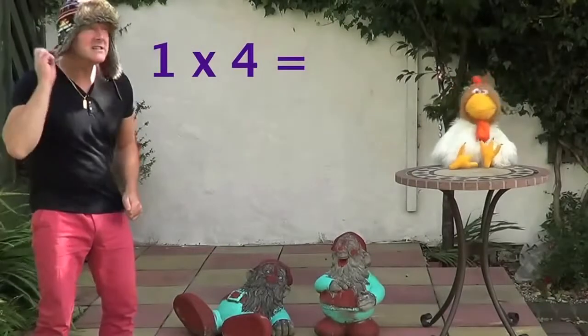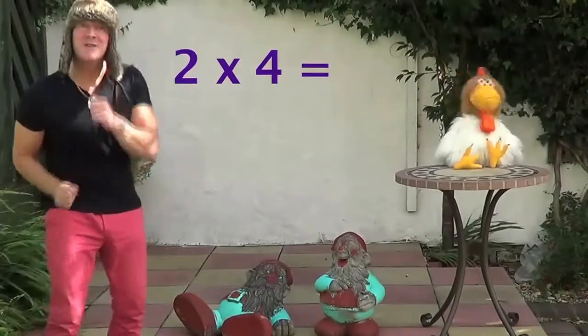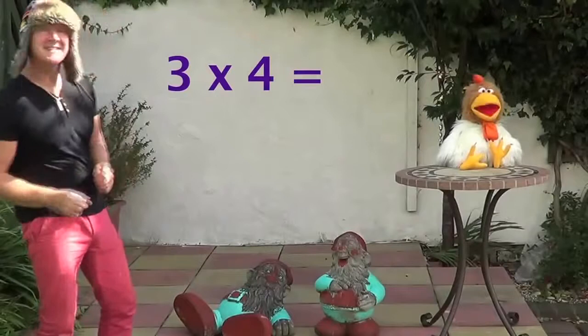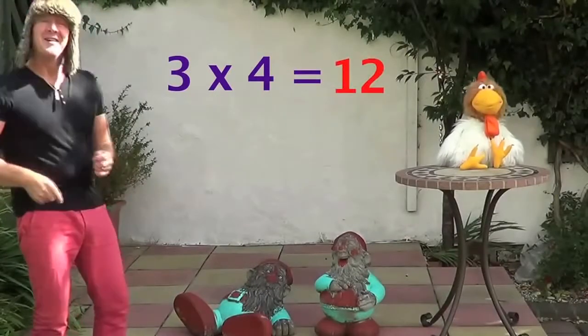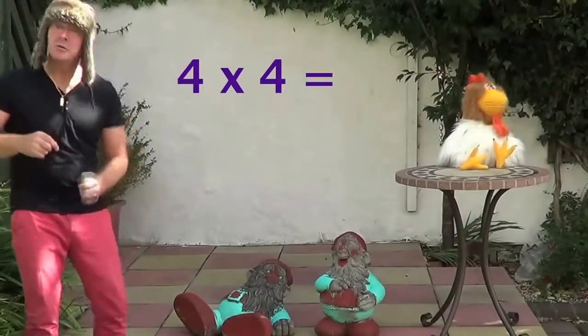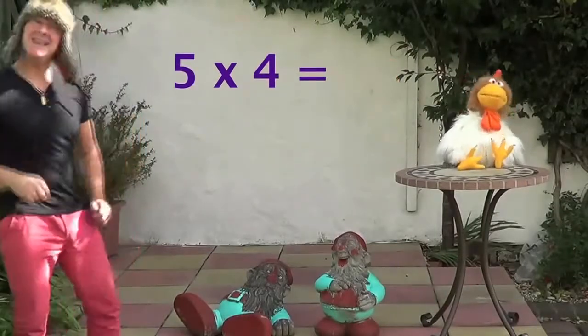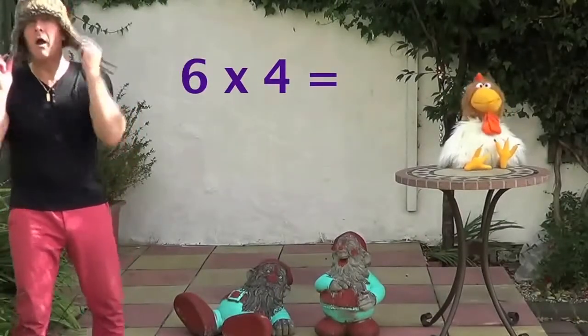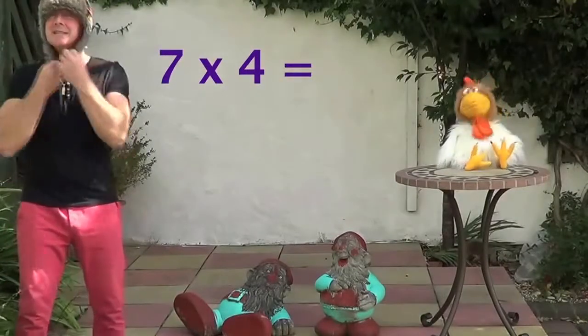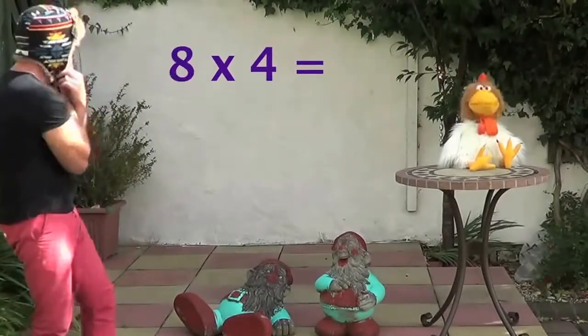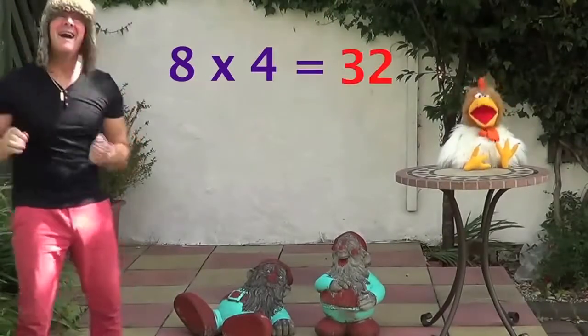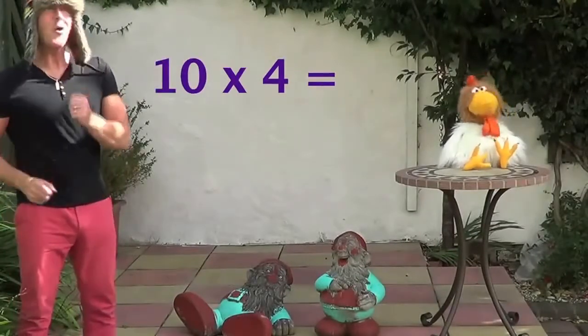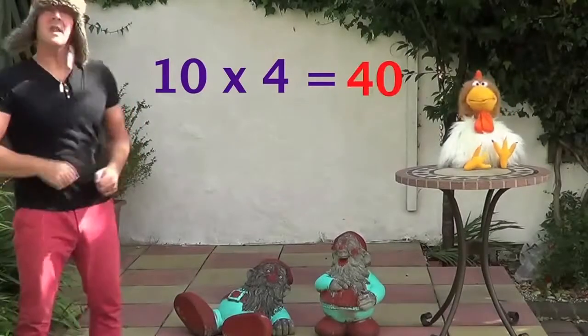1 times 4 is 4. 2 times 4 is 8. 3 times 4 is 12. 4 times 4 is 16. 5 times 4 is 20. 6 times 4 is 24. 7 times 4 is 28. 8 times 4 is 32. 9 times 4 is 36. 10 times 4 is 40.